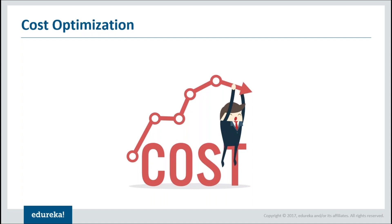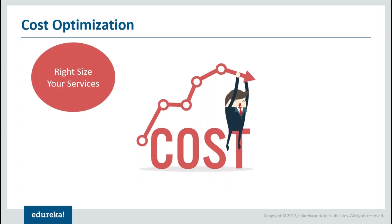Let us take a look at the cost optimization points one by one. First, right-size your services. As mentioned, it is easier to upscale but not easy to downscale. So it is always wise to start with lesser resources and lesser compute capacity. This is where right-sizing becomes very important, and AWS lets you do that since it has a highly flexible pricing model - you can choose minimum resources, start small, and then upscale according to your needs.